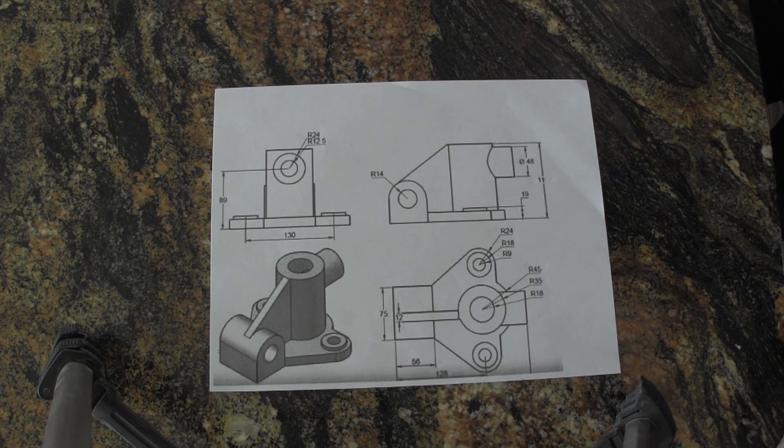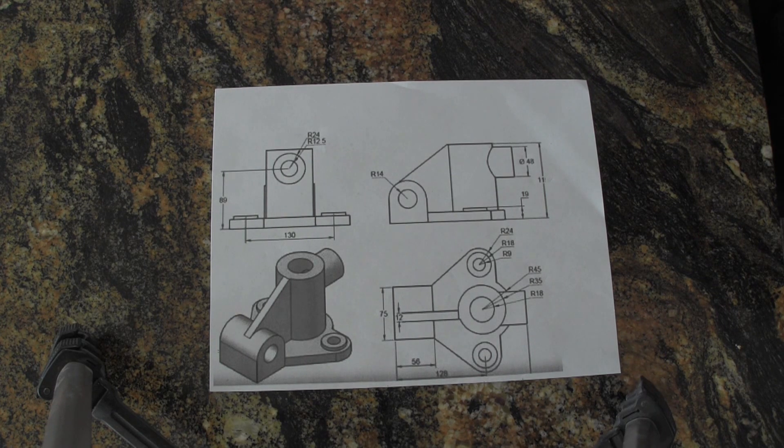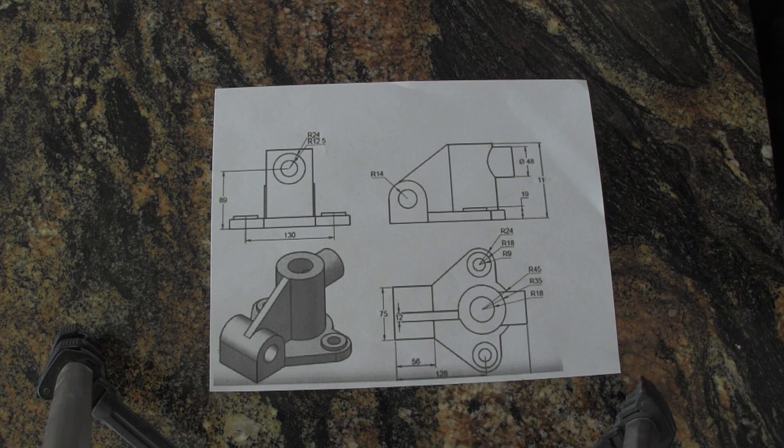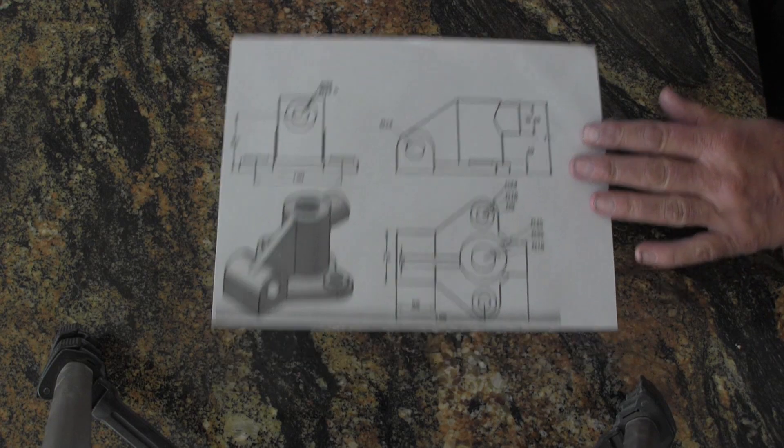And lastly, since the customer didn't draw any fillets on this thing, you're going to have to inform them of fillets that need to be every place there's a sharp inside corner and a radius on sharp outside corners. So you need all that information from the customer. It's best to do it before you start building.